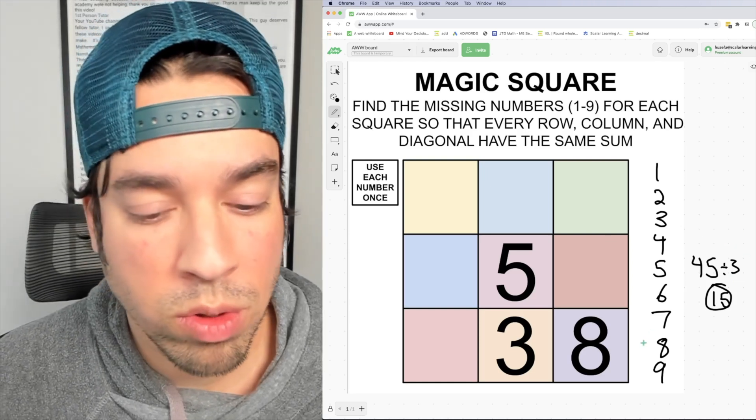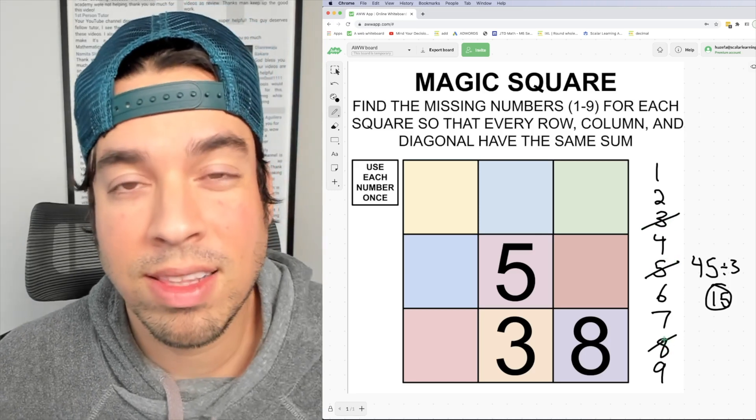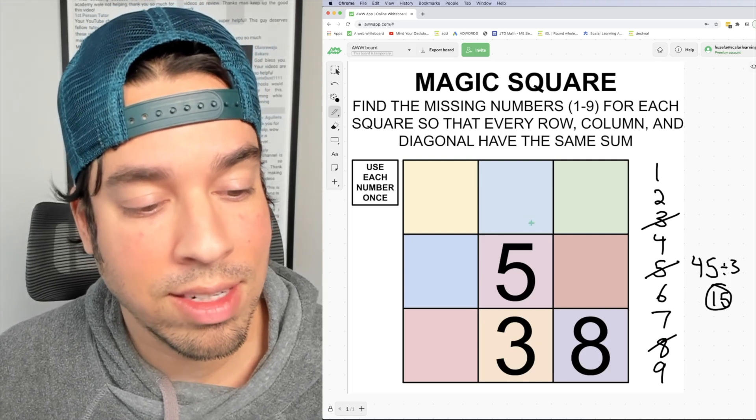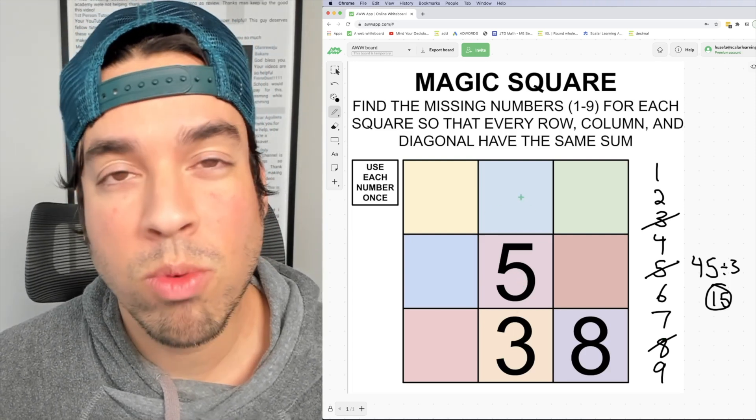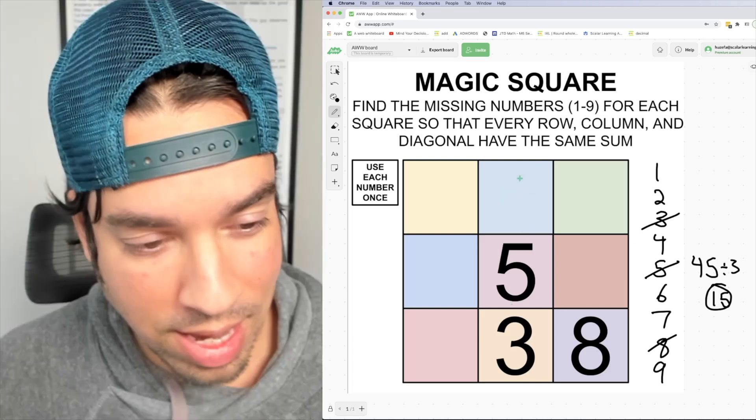Since we're using each number only once I can cross five, three, and eight off the list. Now we must go in a good strategic order. So I see that I've already got in this column three and five. That's great because I only need one more to add to 15, and of course three plus five plus what is 15, that is seven.